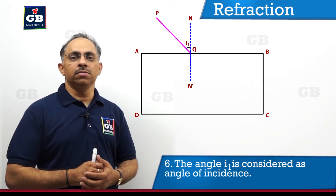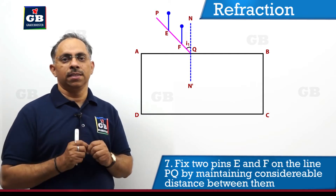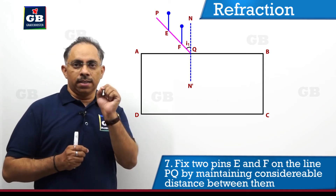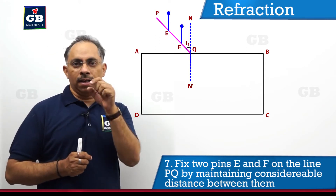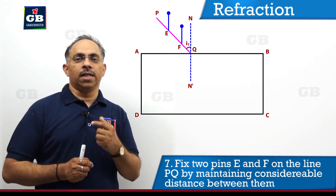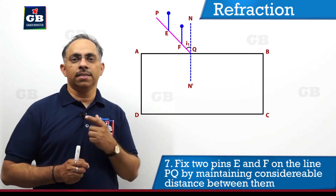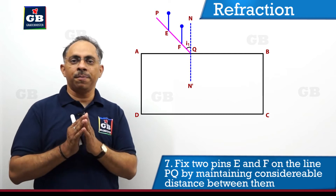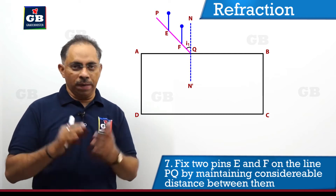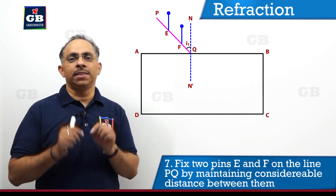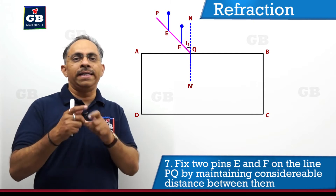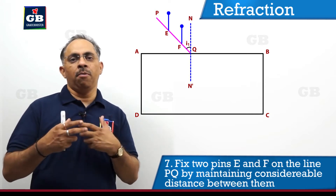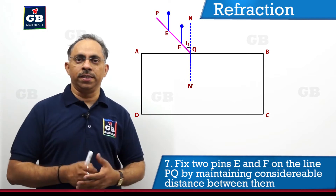Now we will fix two pins at points E and F. Make sure the feet of the pins are aligned along the same line and that the pins are vertically straight — perpendicular to the plane of the paper — maintaining a distance of about 5 to 10 cm between them.